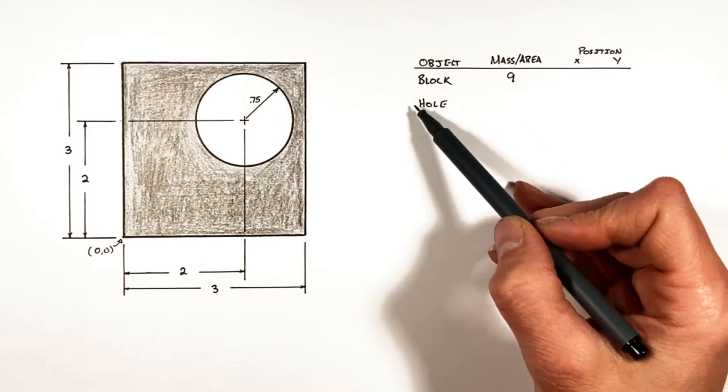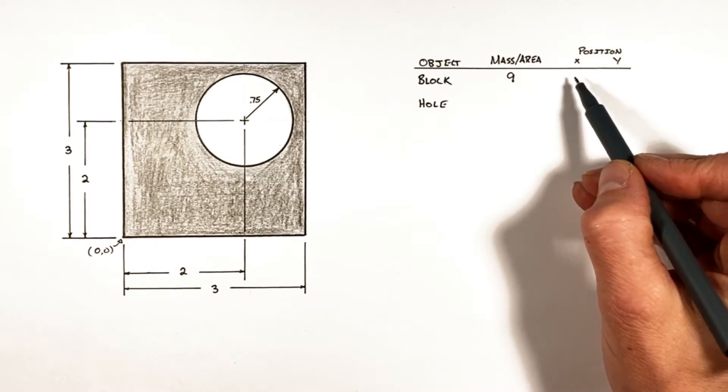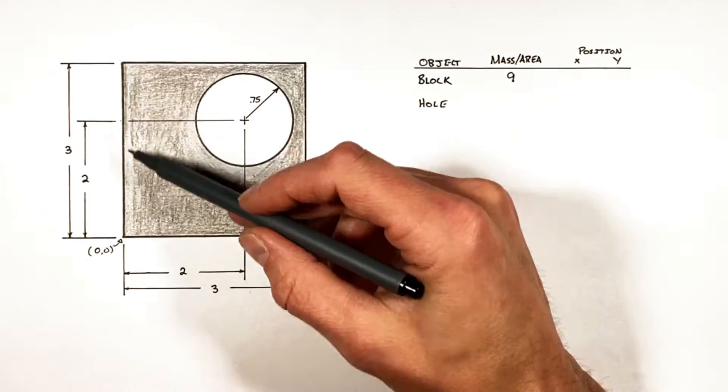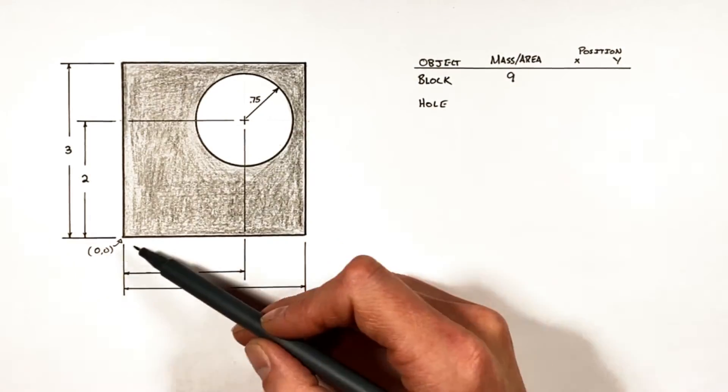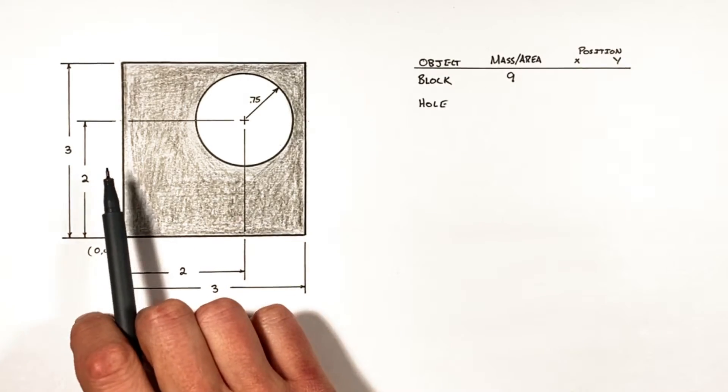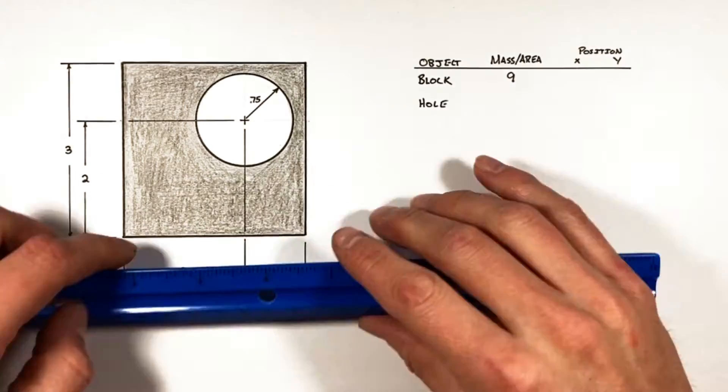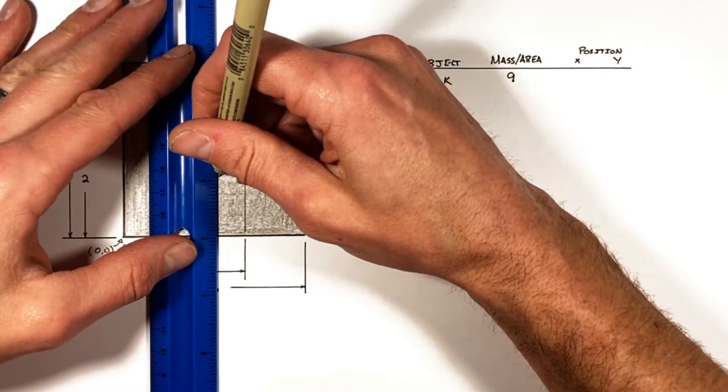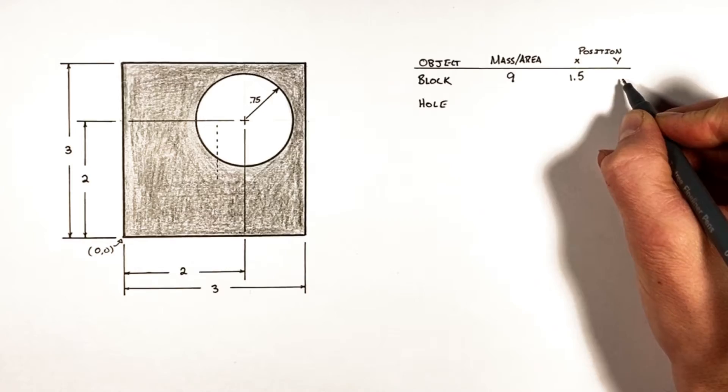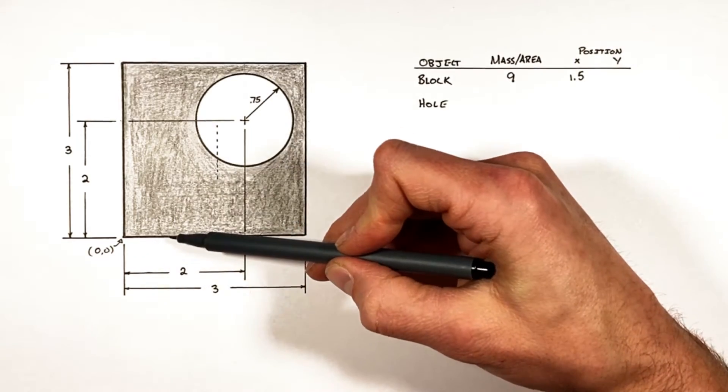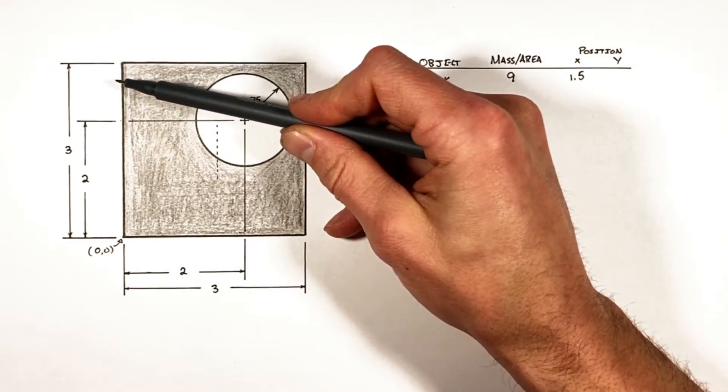Looking at the center of area or center of mass of the block on its own, we know horizontally the center of area or mass of the block is going to be halfway between the left and right edge of the block. So that's a position of 1.5. And vertically we see a similar thing: this center of mass or area vertically is half the height of the block, which is also 1.5.